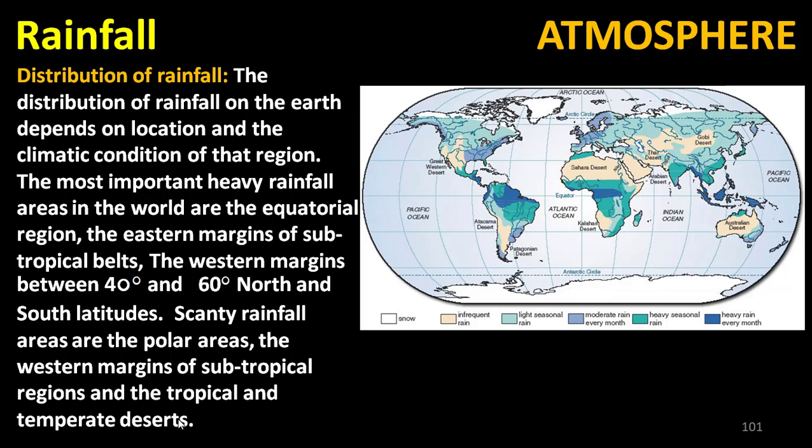The distribution of rainfall on the earth depends on the location and climatic conditions of a region. The most important heavy rainfall areas in the world are the equatorial region, the eastern margins of subtropical belts, and the western margins between 40° and 60° north and south latitudes. Scanty rainfall areas include the polar areas, the western margins of subtropical regions, and the tropical and temperate deserts.